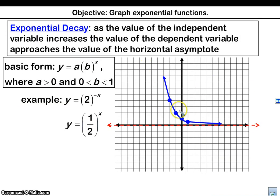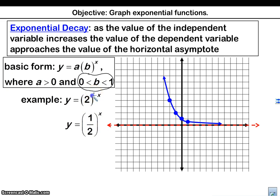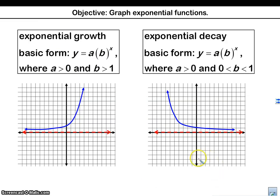Exponential decay looks the opposite direction. As I go from left to right, I'm actually decreasing — going down towards the asymptote. That happens when B is a fraction between 0 and 1. That happens in two cases: when the base is 1 half, or when there's a negative in the power with a big number as the base, because this negative is going to make it equal to 1 half. Let's take a look at the differences between growth and decay — if you want to write that down, that would be a great time.